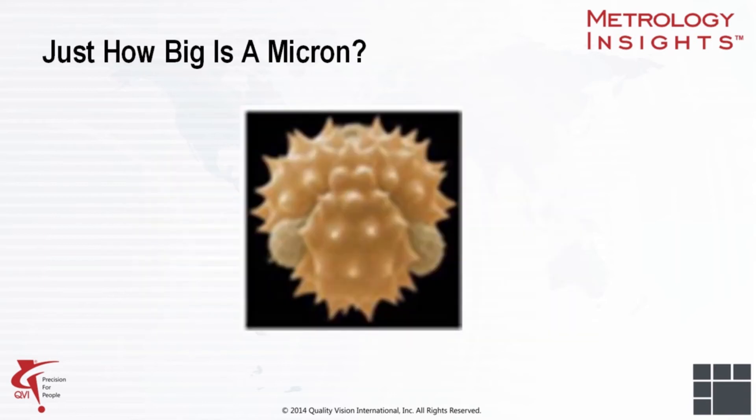First, let's talk about how small micro parts really are. Typically, parts in the range of 10 to 300 microns in size are considered micro. Exactly how big is a micron? Well, consider this. A spore of pollen which cannot be seen with the naked eye is 30 to 50 microns in diameter.